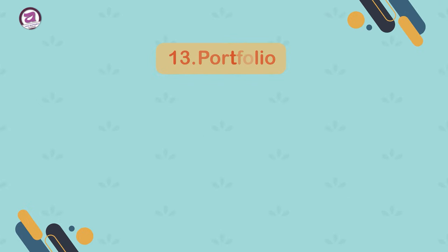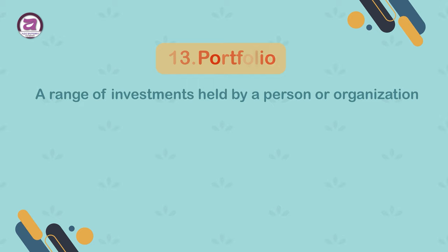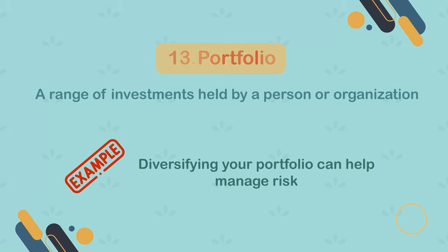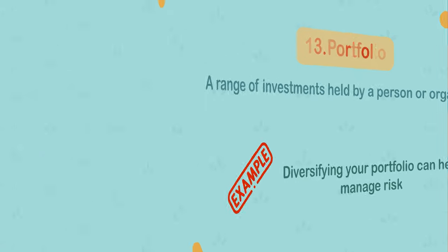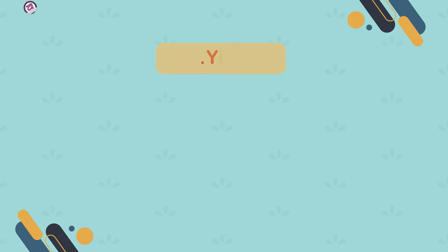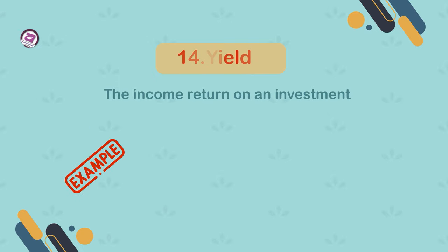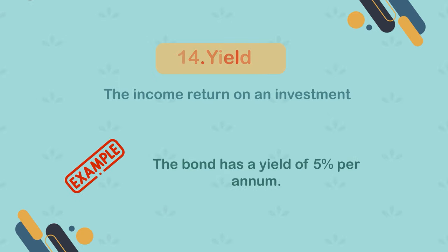13. Portfolio. A range of investments held by a person or organization. Example: diversifying your portfolio can help manage risk. 14. Yield. The income return on an investment. Example: the bond has a yield of 5% per annum.